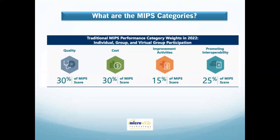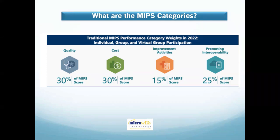MIPS consists of four categories and you've got to score well in all of them to get the maximum points. The categories are: Quality, which contributes 30% of the MIPS score; Cost, also contributing 30%; Improvement Activities, which is 15% of the final score; and Promoting Interoperability, which is 25% of the final score.